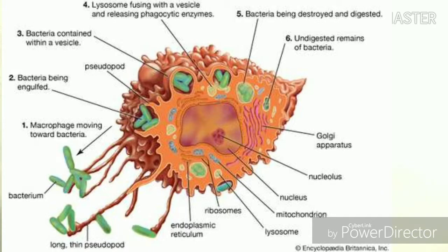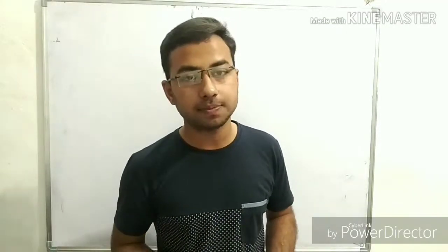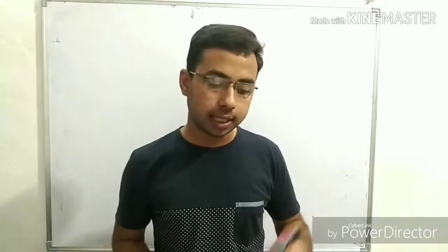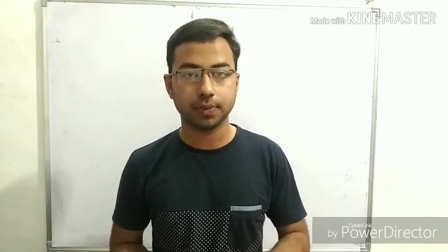In step six, the undigested remains of bacteria are expelled. The bacteria has been killed and its nutrition digested; what remains are the undigested remains. Regarding structure, macrophage contains Golgi apparatus, nucleolus, nucleus, mitochondria, lysosomes, ribosomes, and endoplasmic reticulum — all cell organelles are present. The key difference is that phagocytosis occurs inside it.